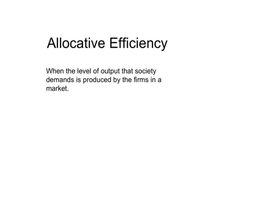In other words, allocative efficiency is achieved if the marginal benefit enjoyed by consumers is equal to the marginal cost faced by producers.